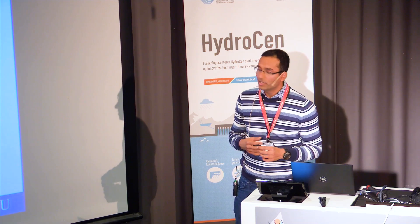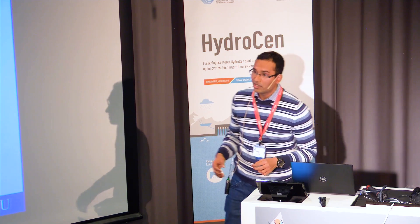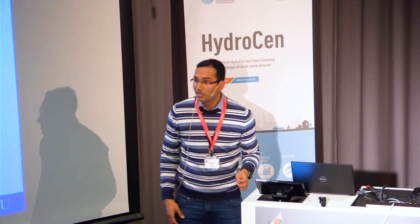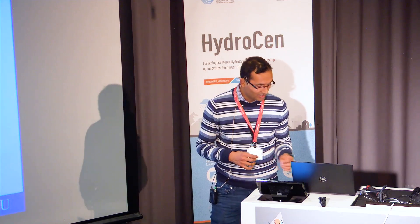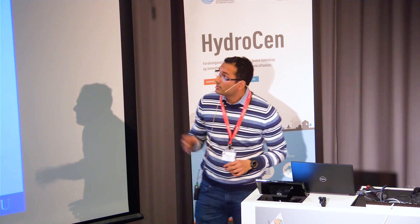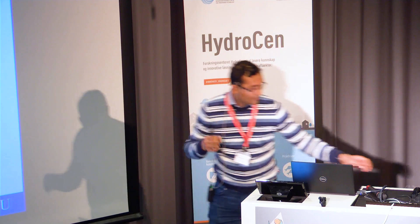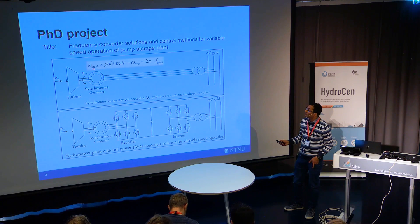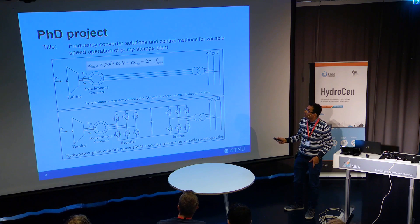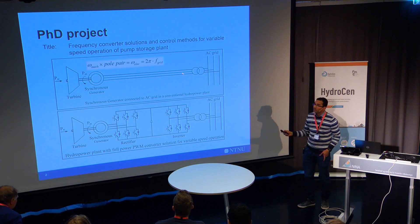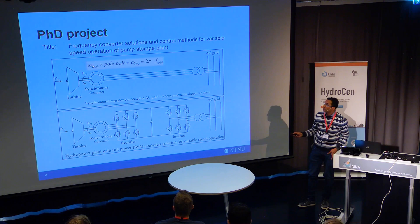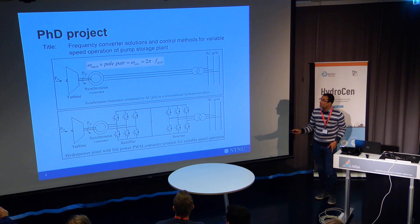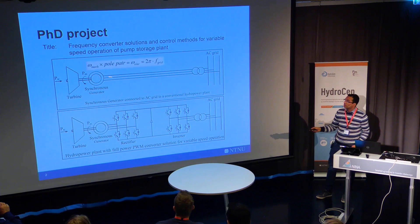I'll explain how we can execute that from an electrical perspective. The relation between electrical and mechanical speed is as follows: we run the turbine at mechanical speed, and the number of pole pairs decides the frequency of the grid. So we mostly run at constant speed, the frequency of the grid remains constant, and the synchronous machine is connected directly to the grid.